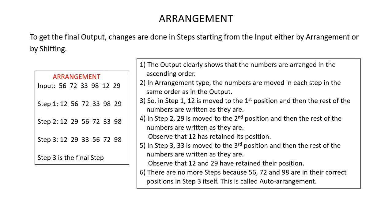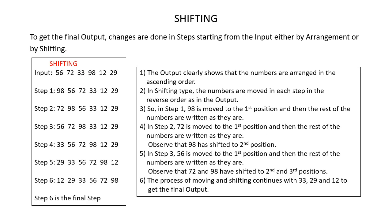Hope you have understood the arrangement method. Let's now understand the shifting method. To get the final output, changes are done in steps either by arrangement or by shifting. In the shifting method, look at the example — you are given an input which consists only of numbers, then you are given 6 steps and it's given that step 6 is the final step, meaning step 6 is the output.